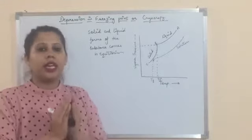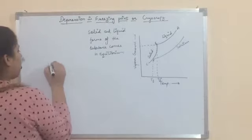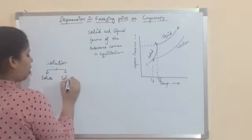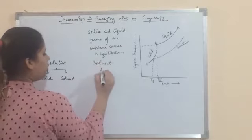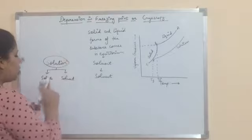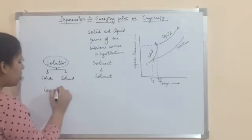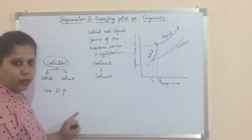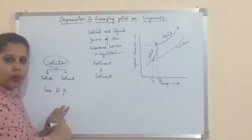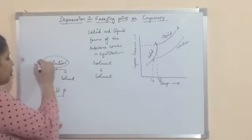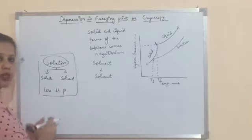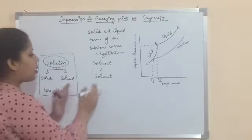If you compare the freezing point of a solution — which contains solute as well as solvent — with that of the pure solvent, the solution will have lower vapor pressure than the pure solvent. So if vapor pressure is lower, the freezing point will come earlier. Less vapor pressure means less temperature, so there is a depression in freezing point for the solution because it contains solute. Its vapor pressure is lower, so its freezing point occurs at an earlier stage compared to the pure solid.